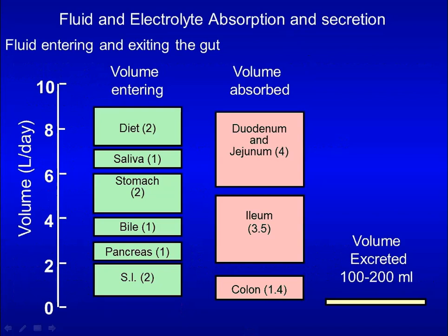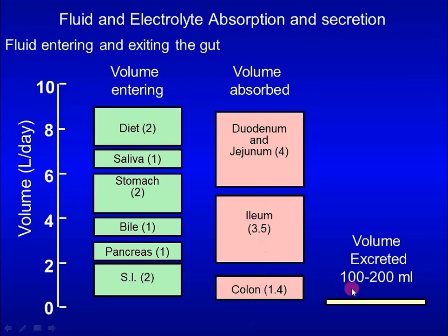Every day, around nine liters of fluid enter the GI tract — two liters from food and the rest from gastrointestinal secretions. Most of the fluid is absorbed. The small intestine absorbs around 7.5 liters, and the colon absorbs 1.4 liters, with only 100 to 200 milliliters excreted.